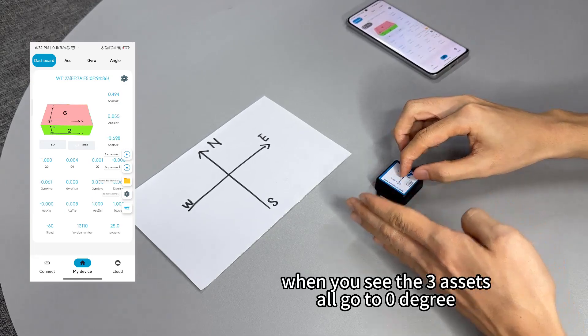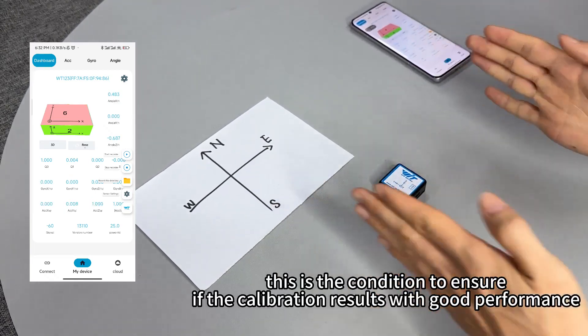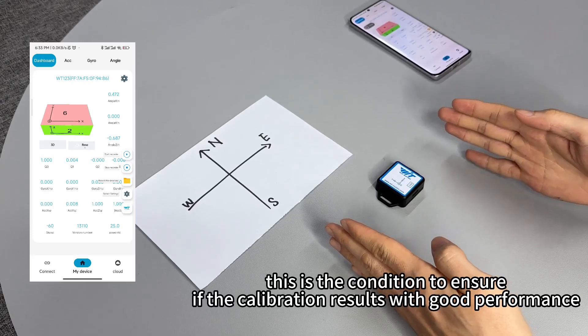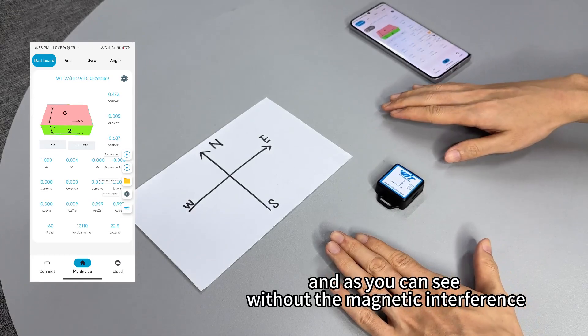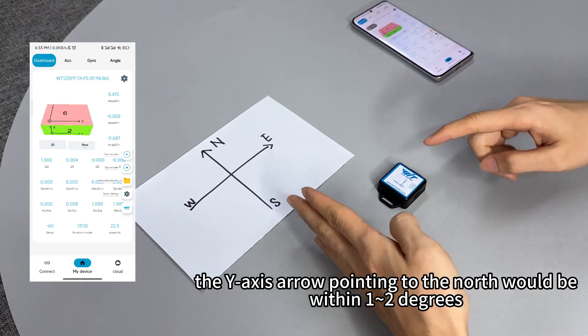When you see the three axes all go to zero degrees, this is the condition to ensure if the calibration results with good performance. And as you can see without the magnetic interference, the z-axis arrow pointing to the north.